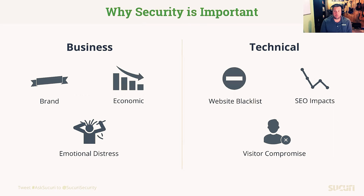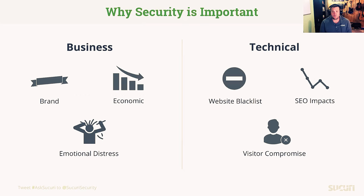Some technical impacts include things like the blacklisting of a domain, which can take time and is at the mercy of, say, Google to delist. There are impacts to SEO — marketing teams who work so hard on SEO really feel that damage done through a compromise. And the hot topic nowadays, rightfully so, is the protection of visitor or customer data. We're seeing things like GDPR that are focused on data protection, and other countries and regions are starting to follow suit. So protecting your customer's data is so critical right now.